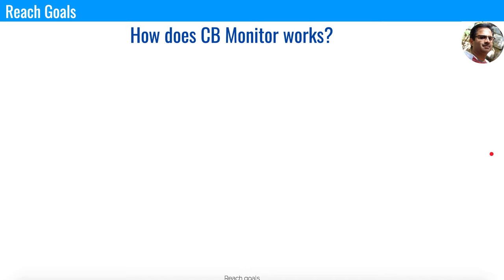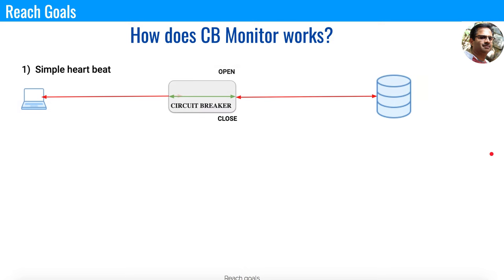There are three types of monitoring. The first one is a simple heartbeat mechanism. You have a client connecting through the circuit breaker to the database. The circuit breaker is closed and the connection is seamless. The monitor has a heartbeat mechanism — it connects to the services and checks if they are available or not. When it notices the services are available and working, the circuit breaker remains closed. If it identifies the service is not available, the circuit breaker opens immediately and the connection is disconnected.